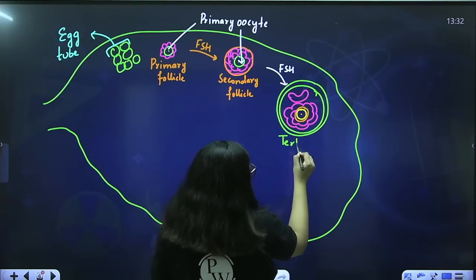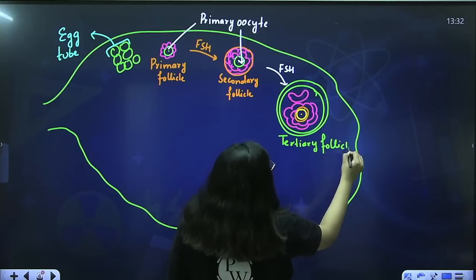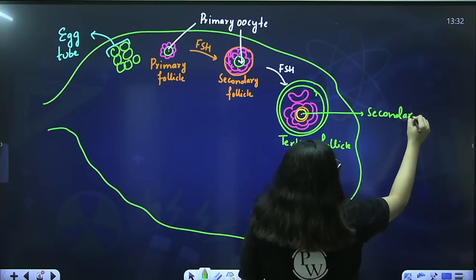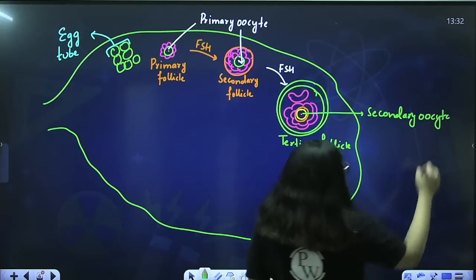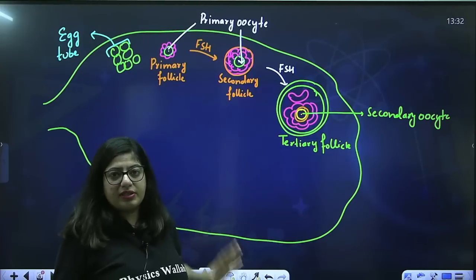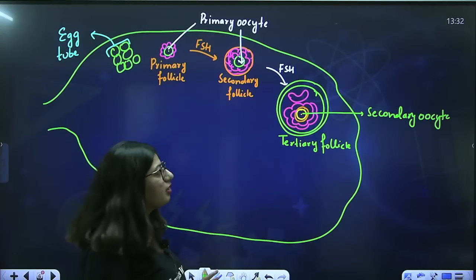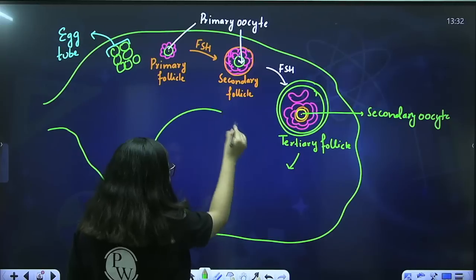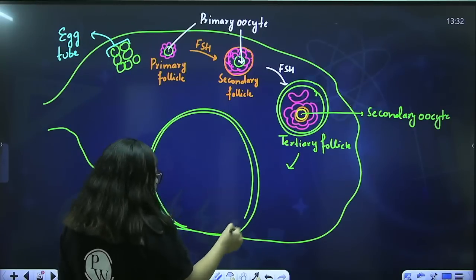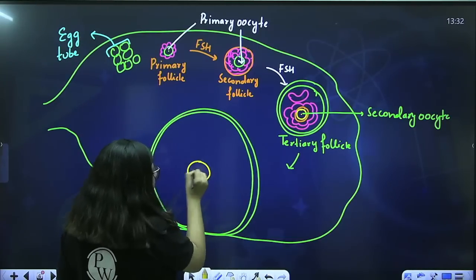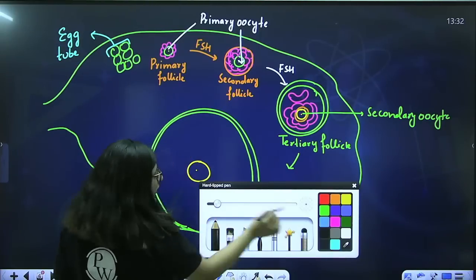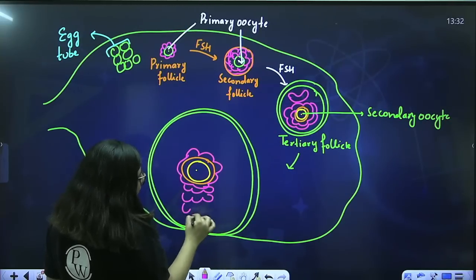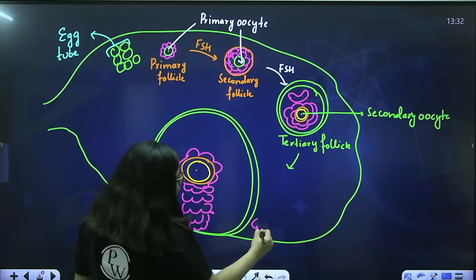This follicle is your Graafian follicle — the mature follicle. After the mature follicle is formed, which also contains the secondary oocyte that is stuck at meiosis II metaphase II, this has to move out from the ovary. If it has to complete meiosis II, it has to meet a sperm, and sperm can only enter inside the fallopian tube — it cannot go inside the ovary. So this structure has to move out.